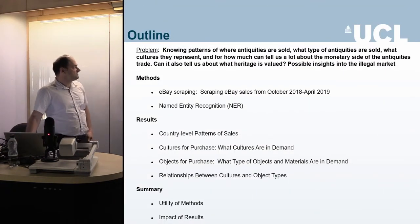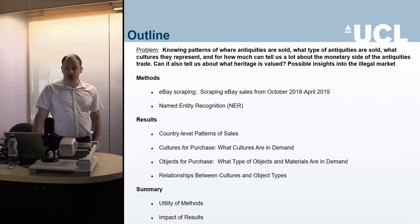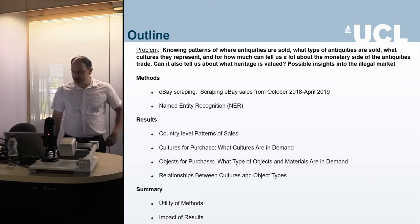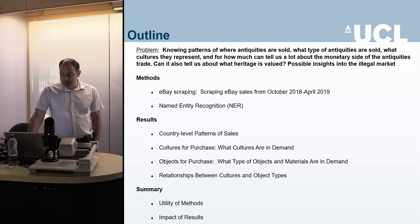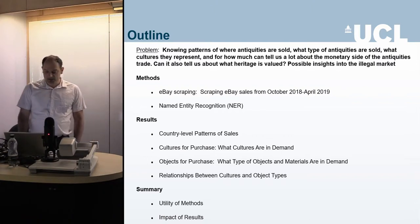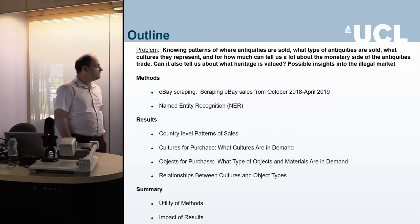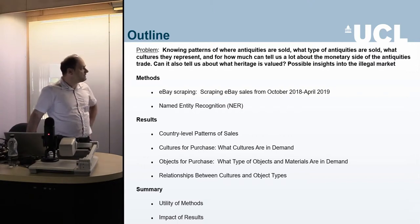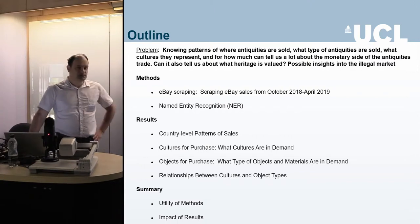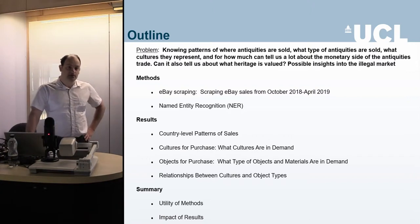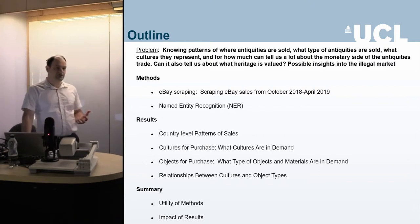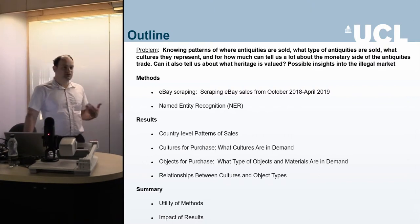The problem is knowing patterns of where antiquities are sold, what types are being sold, and the cultures they represent — trying to classify the cultural interests on eBay, what they tell us about the monetary side, and what people actually value. A side question was whether we can use eBay as a barometer of the illegal antiquities market, getting a sense of wider interests tied to news events, looting, and those kinds of things.